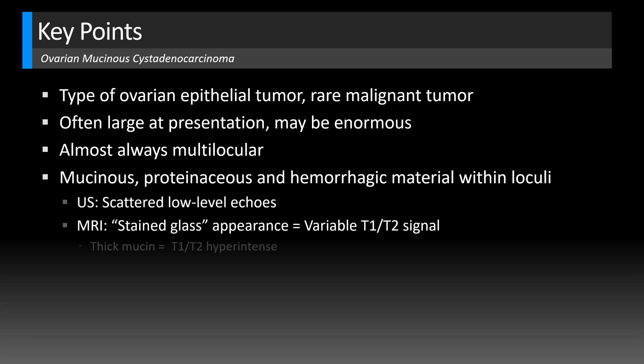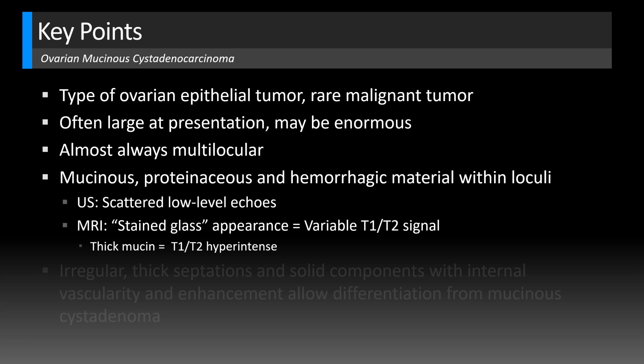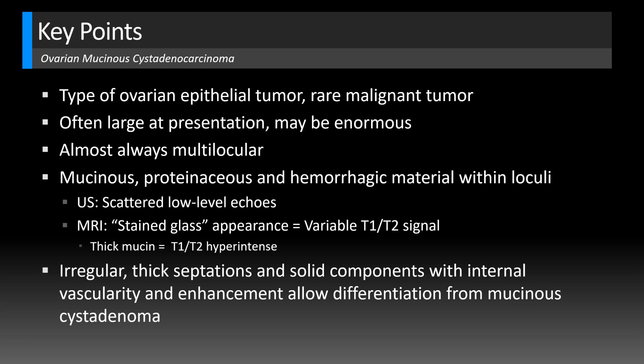Depending on how thick the mucin is — really thick mucin will be T1 and T2 bright, and more watery mucin will follow fluid signals. To differentiate from benign mucinous cystadenoma: if you see irregular thick septations and solid components with internal vascularity on ultrasound and enhancement on MRI, that will point more towards a mucinous cystadenocarcinoma.